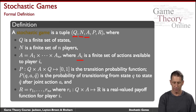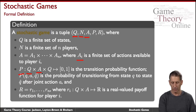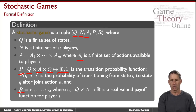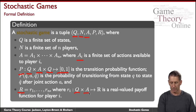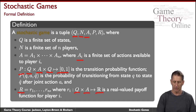We also have two functions. First, the transition probability function: depending on the state we're in and the actions taken, we move to any of the other states — or the same state — with a certain probability governed by this distribution. And second, the reward function, which tells us that if in a certain state a certain action profile was taken, then R sub i is the reward to agent i.